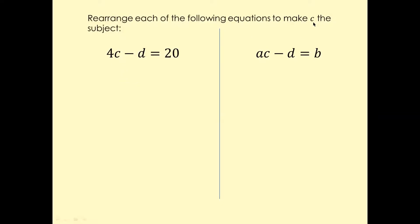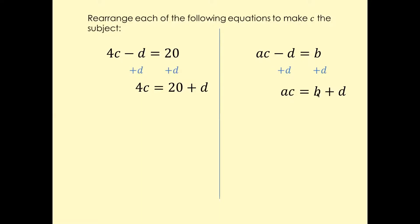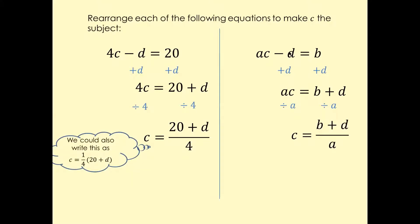Here we have 4C minus D and we want to make C the subject. First move D to the other side: plus D on both sides, so the D cancels, and you're left with 4C equals 20 plus D. Similarly for AC equals B plus D, you need to cancel the coefficient. Divide by four on both sides: C equals 20 plus D over four. And divide by A on both sides: C equals B plus D over A.